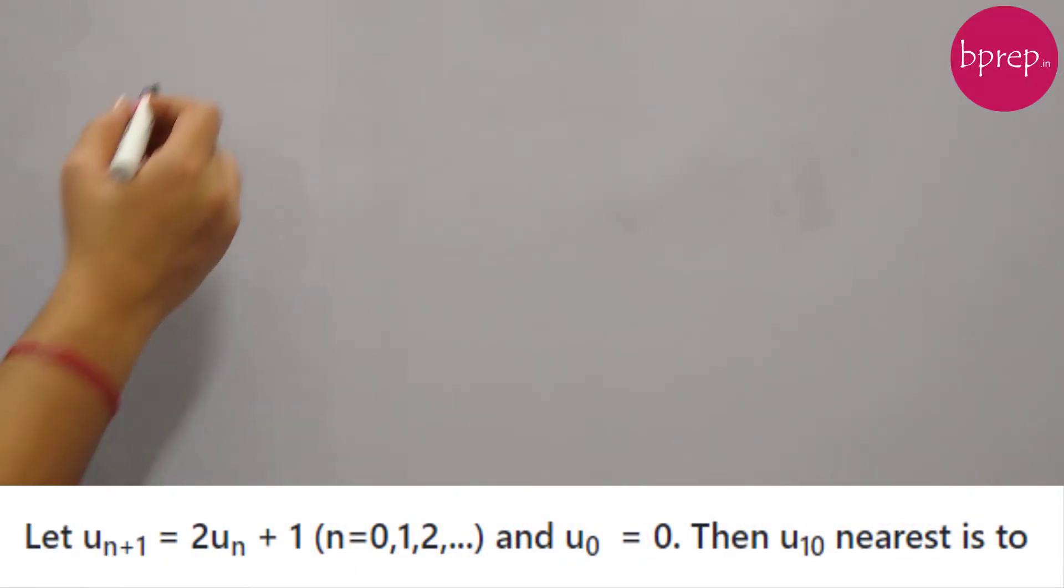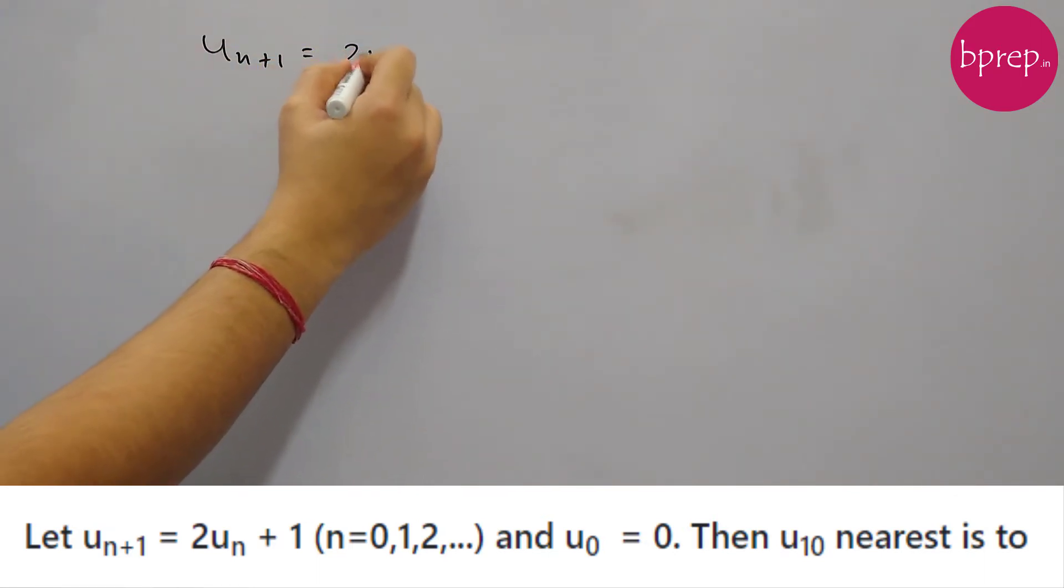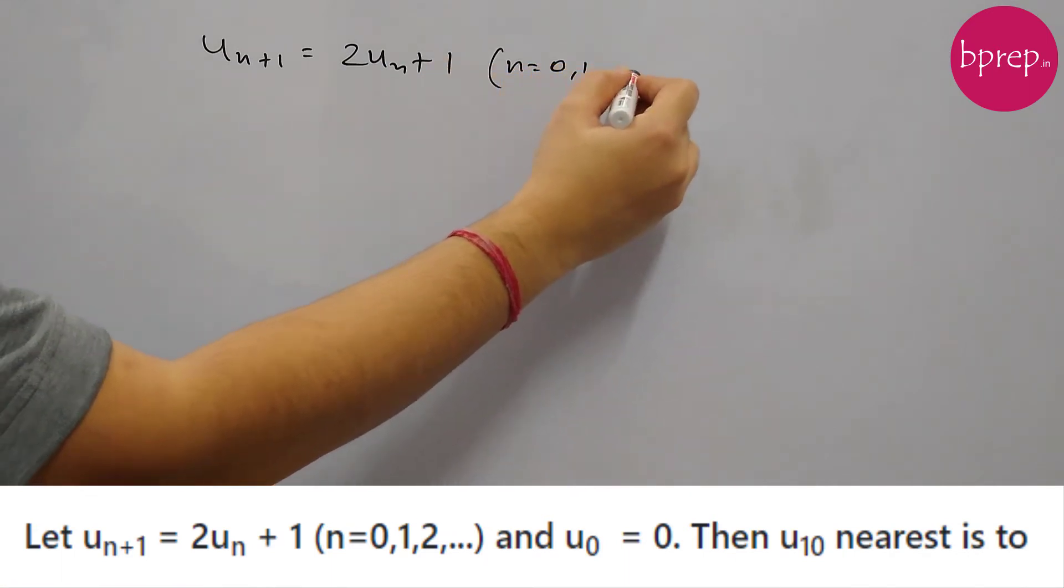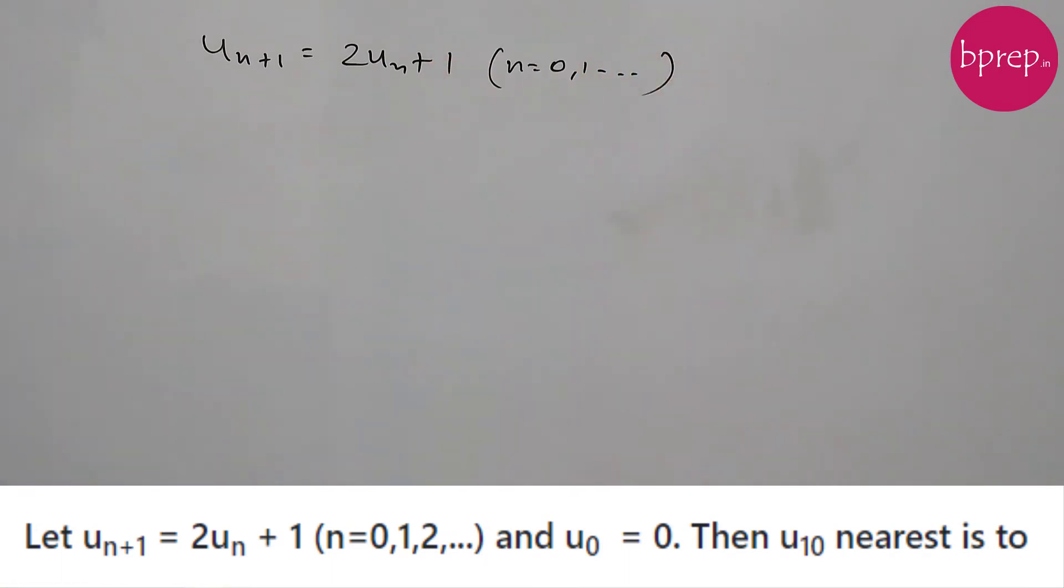In this question it is given that u_{n+1} = 2u_n + 1 where n equals 0, 1, 2, and so on, can be greater than 0. It is also given that u_0 = 0 and we need to find out u_10.